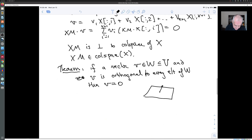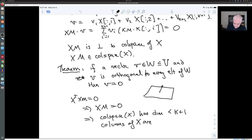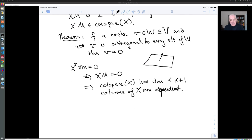So all of this put together tells us that if we started with the assumption that x transpose xm equals zero, we concluded that xm equals zero, and that tells us that the column space of x has dimension less than k plus one, or the columns of x are linearly dependent. So that finishes the proof that says that the least squares problem is solvable if and only if the features are linearly independent.